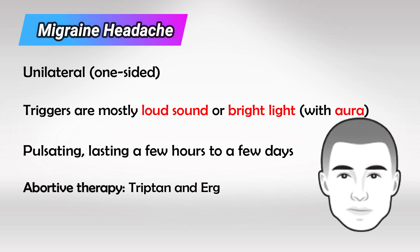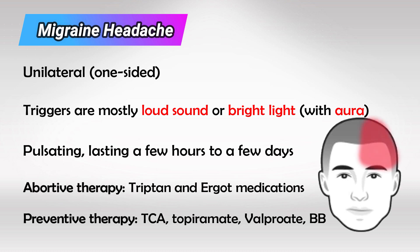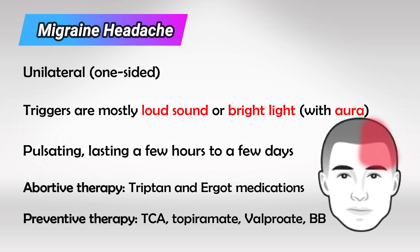We have two types of treatment, either abortive or preventive. Abortive therapy are the ones that we use during the symptoms to alleviate the symptoms, and these include triptans, NSAIDs, and ergot products. The preventive ones will, of course, include avoiding the symptoms, TCAs, topiramate, valproate, and beta blockers.